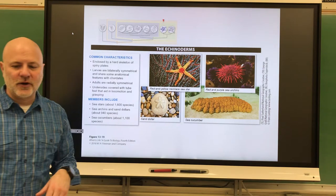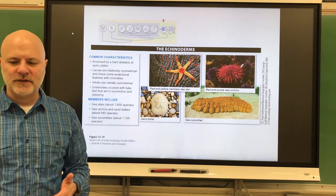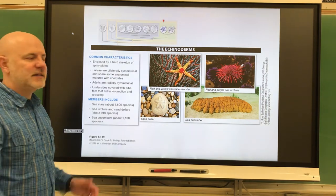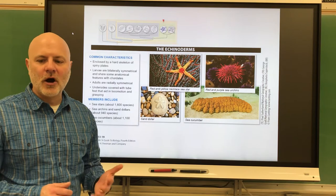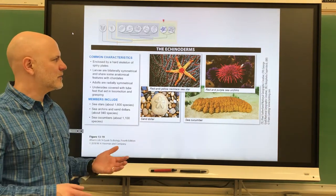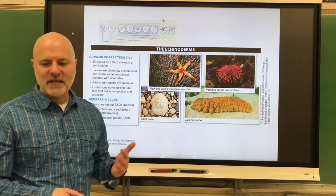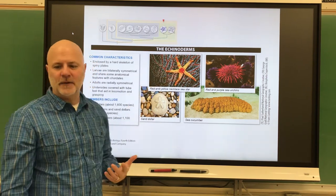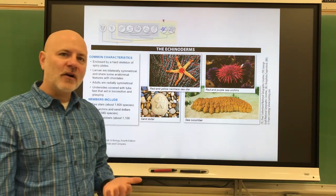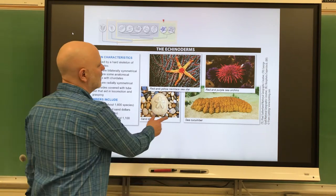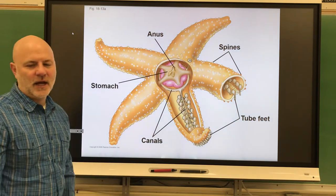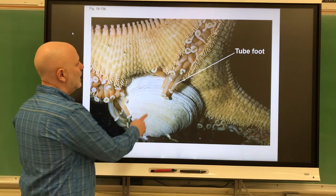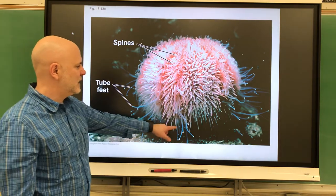Let's move on to echinoderms. Echinoderms are sea stars, sea urchins, sand dollars, and sea cucumbers. These guys are coelomates and radially symmetrical. They have a hard endoskeleton underneath a spiny skin. They are deuterostomes and have a pentamerous body plan — a five-part body plan, as you can see. Their larvae are bilaterally symmetrical. Their undersides are covered with tube feet, which help them move and capture prey. You can see here a sea star going after a clam. These guys are all marine. This is a sea urchin — you can see those tube feet sticking out.